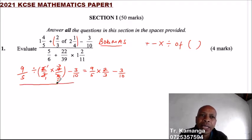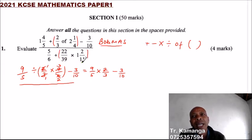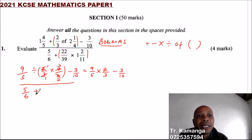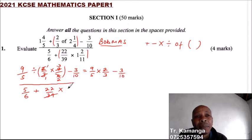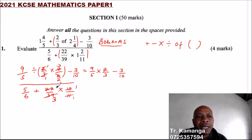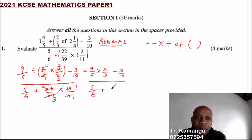We come to the denominator. In the denominator, we do not have 'of,' we do not have brackets, we do not have division. So what we have is multiplication — that is the operation we start with. We write 5/6, we add 22/39. We can simplify that by 11. First, we write 1 and 2/11 into an improper fraction: 11 times 1 is 11, plus 2, that is 13/11. We can divide by 13 is 3, by 13 is 1, by 11 is 1, by 11 is 2. So our denominator gives us 5/6 plus 2/3.